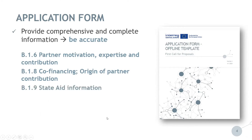In section B.1.9, State Aid information, applicants provide their own assessment of the State Aid relevance of planned project activities. They also identify if there is potential indirect aid to be granted to target groups and final beneficiaries. This self-assessment builds on the following key questions.